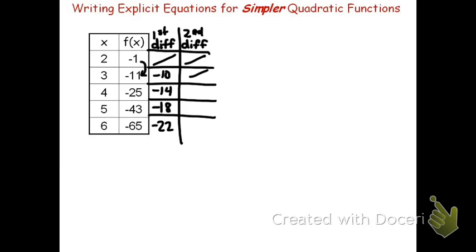To find the second differences, we'll look at the differences between the first. To go from negative 10 to negative 14, you're subtracting 4. To go from negative 14 to negative 18, you're also subtracting 4. And again here.